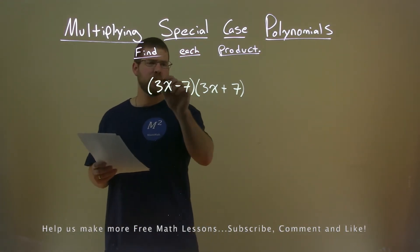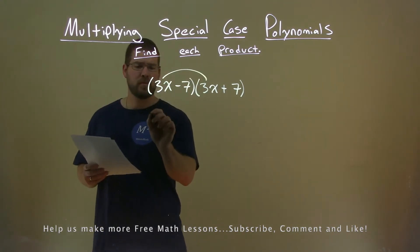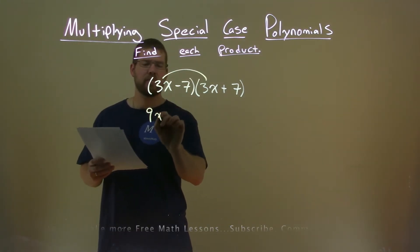First step, 3x times 3x, 3 times 3 is 9, x times x, x squared.